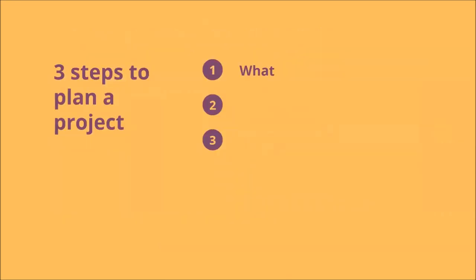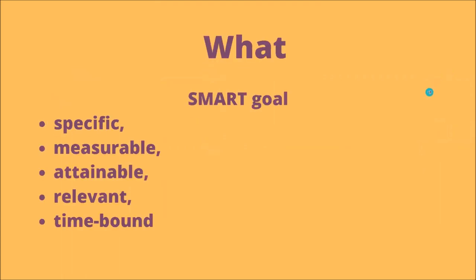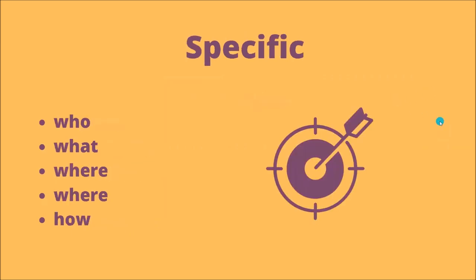There are three steps to plan a project. The first one is to establish clearly what this project is. And to do that, you can use what we call the SMART goal. SMART is an acronym that stands for Specific, Measurable, Attainable, Relevant, and Time-bound. Let's see what this could be.